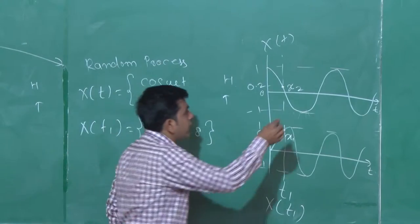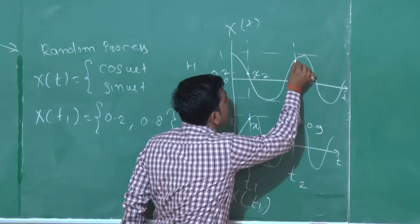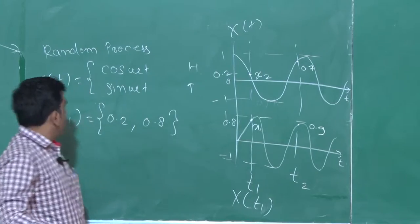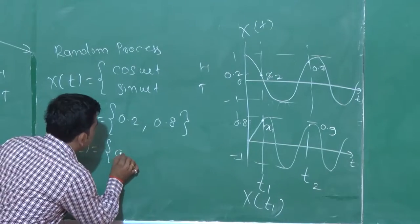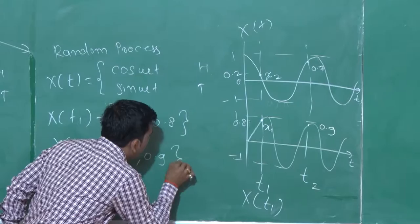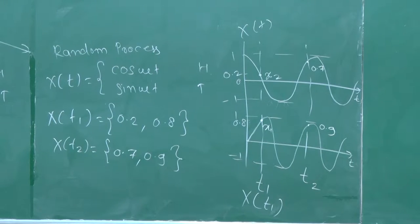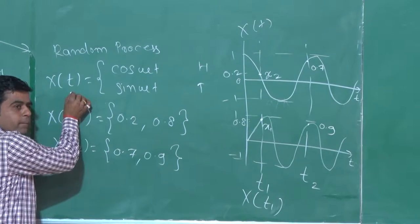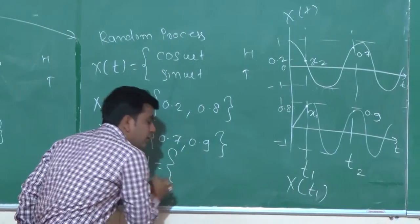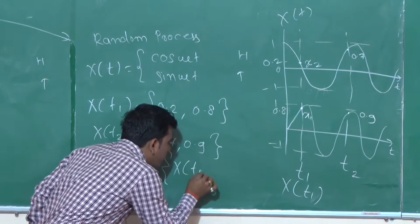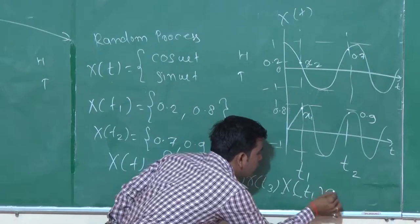Now just assume a second point, we have to consider this is your t2. Again, this will give some values: this is 0.9 and this is 0.7. So we are having second random variable x(t2), it will give the value 0.7 and 0.9 with the probability of 0.5, 0.5, and continuing up to infinity. Can I say that x(t) is a random process which is a collection of x(t1), x(t2), x(t3), and so on?